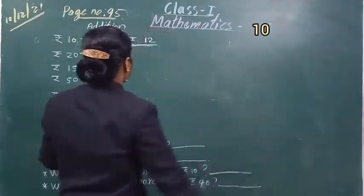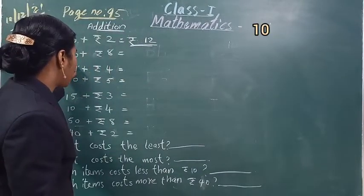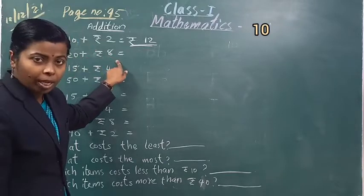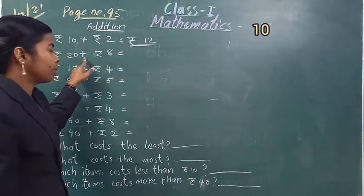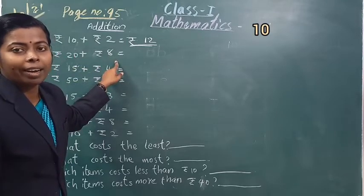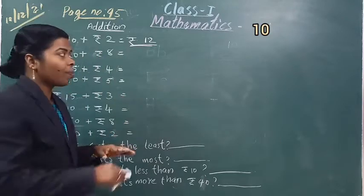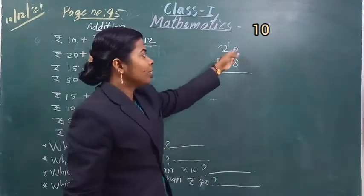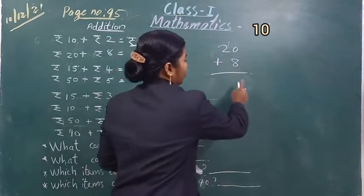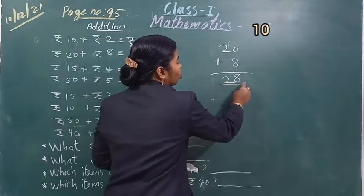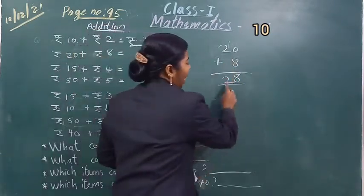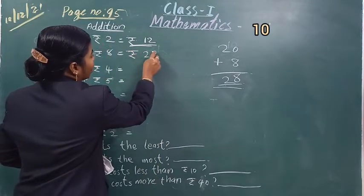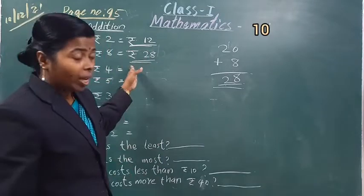Then second. Second line: 20. रुपीज 20 plus रुपीज 8. 20 रुपीज के साथ कितने number add करना है? 8 number. 20 plus 8. 0 plus 8 is 8. Then here 2. क्या answer मिल जाएगा? 20 plus 8 is 28. Okay students, 28 रुपीज है.